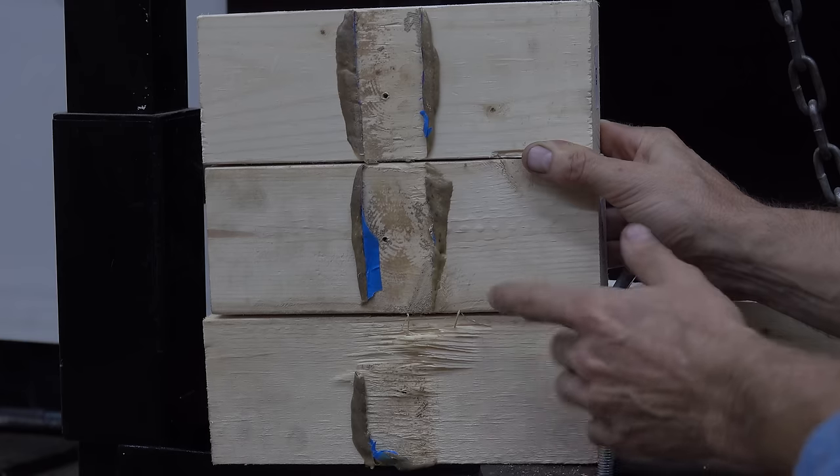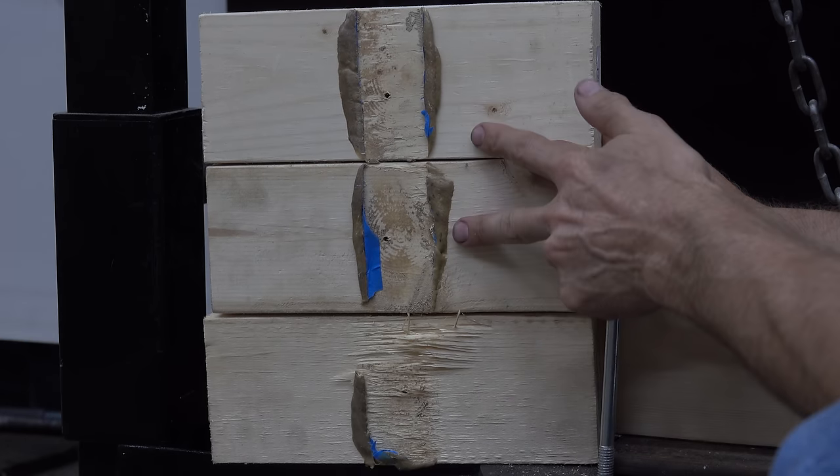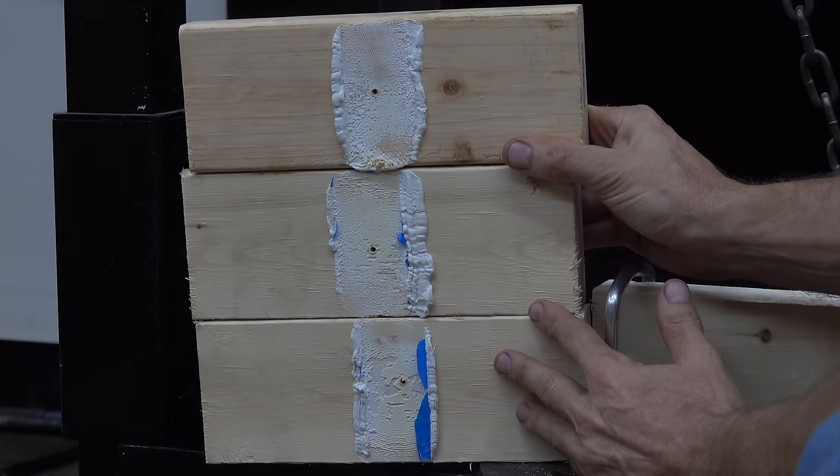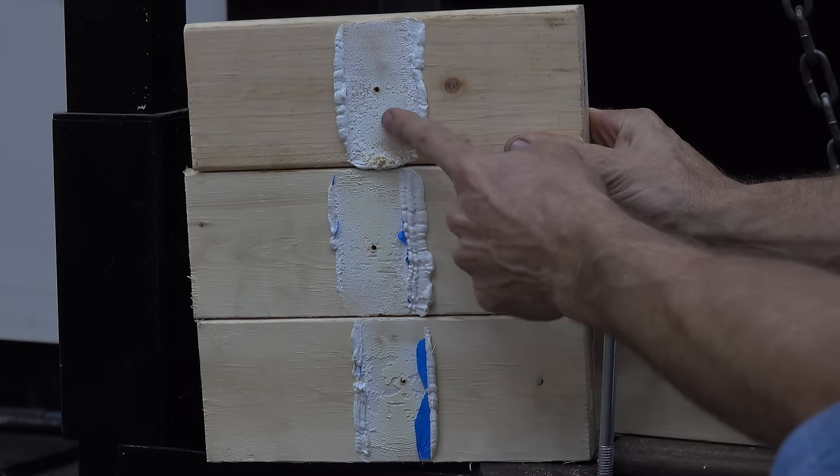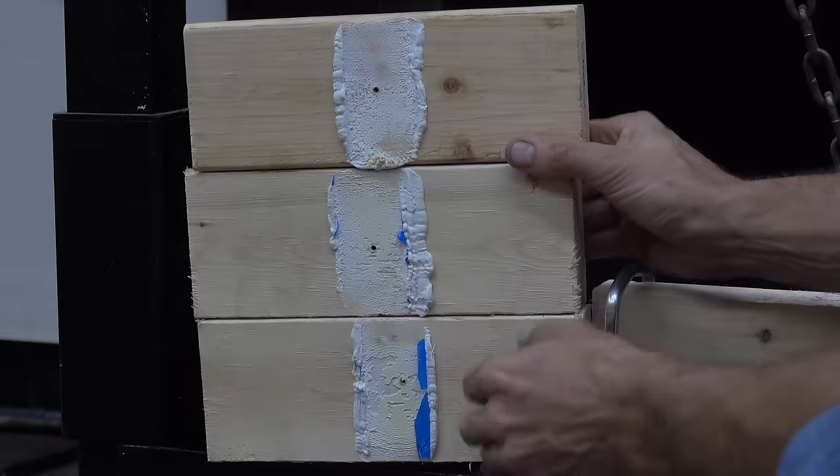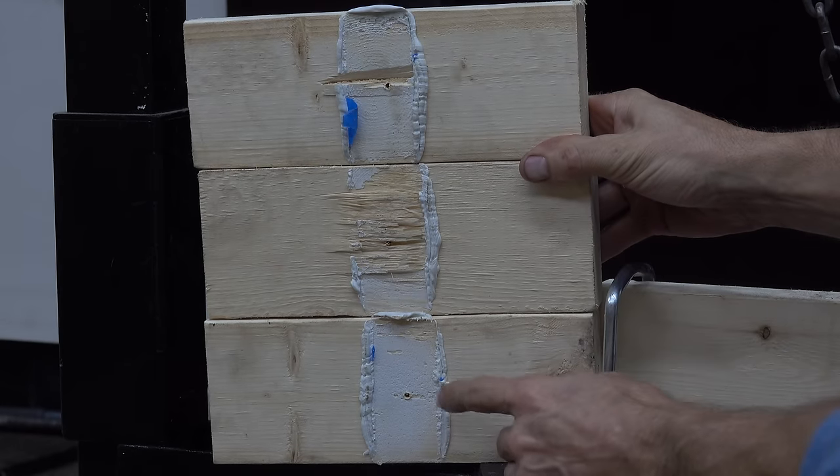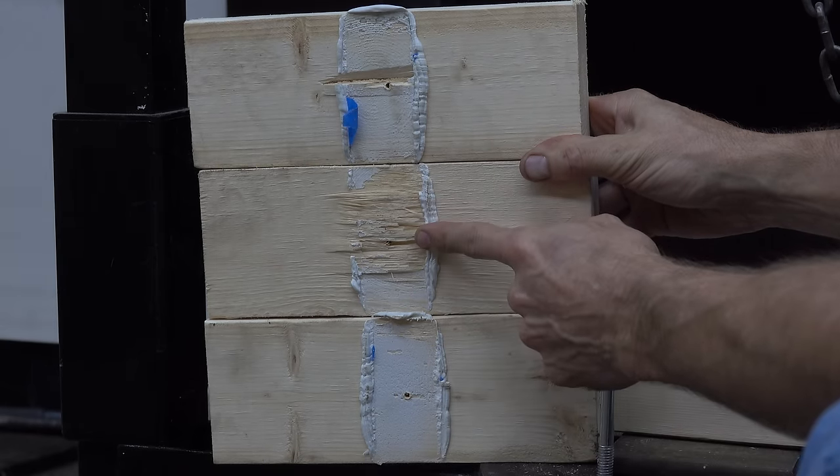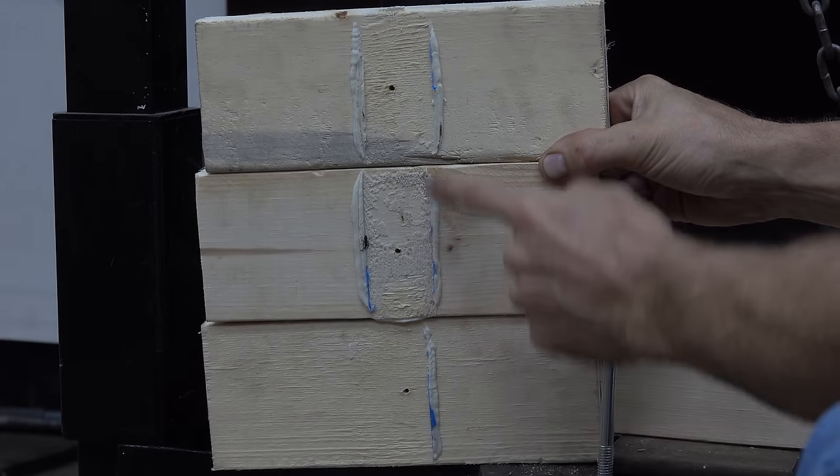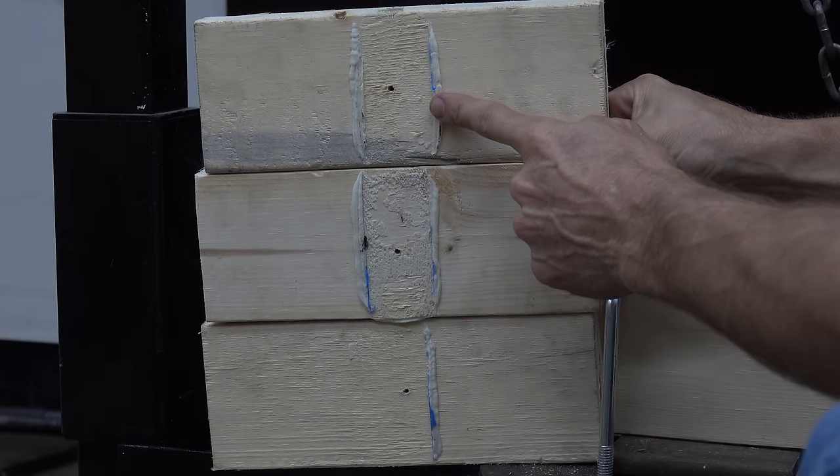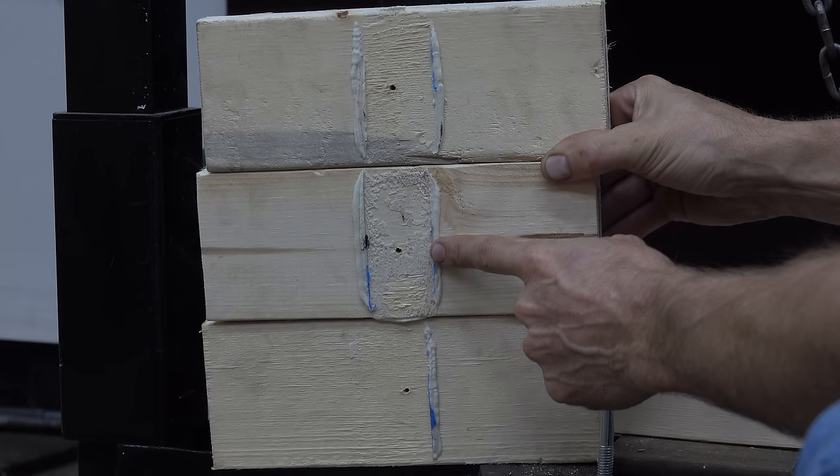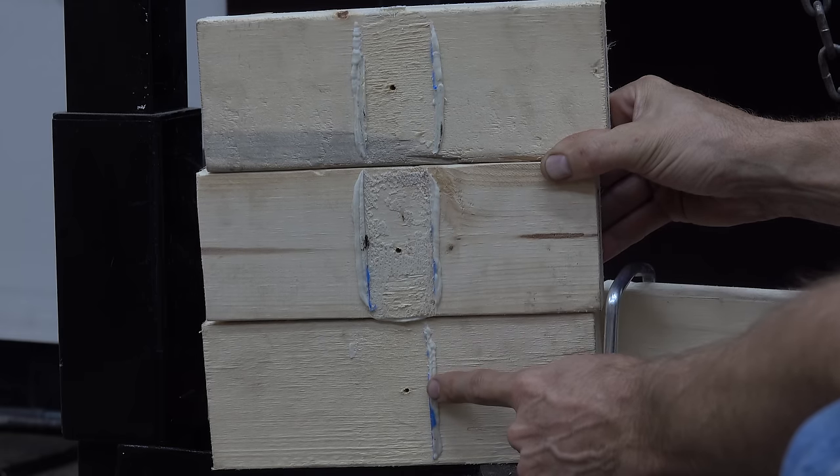So did the construction adhesive fail or did the wood fail? In two out of three instances with F26, it was the construction adhesive. With Flex Glue, it looks like the glue failed three out of three times before the wood failed. With Gorilla Glue, in two out of three instances the glue failed. In one instance, the wood failed. With Red Devil, it was a combination of both. You can see that the wood partially failed as well as the glue.